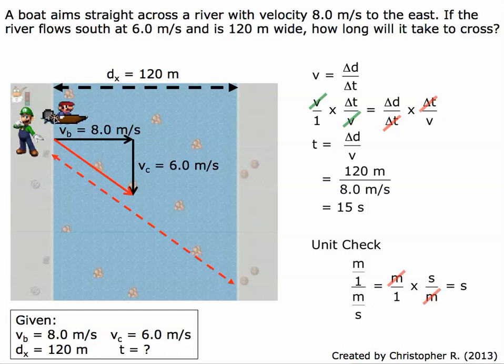So for a distance of 120 meters with a boat going 8 meters per second, and the velocity of the river current is 6 meters per second, it's going to take 15 seconds for Mario to get across the river.